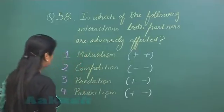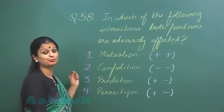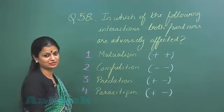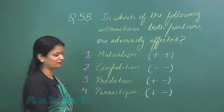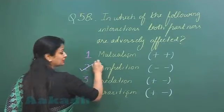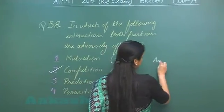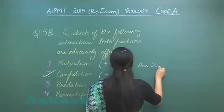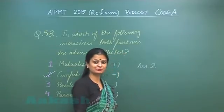So out of the four options, the right option for this question where both interacting species are negatively affected is option number 2. The answer is 2. Let's move on to question 59.